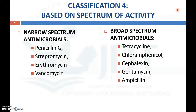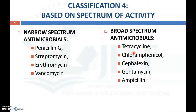The fourth classification is based on spectrum of activity — narrow spectrum or broad spectrum. Narrow spectrum antibiotics kill only one group, either gram-positive or gram-negative. Examples of narrow spectrum are penicillin G, streptomycin, erythromycin, and vancomycin. Broad spectrum antibiotic examples are tetracycline, chloramphenicol, cephalexin, gentamicin, and ampicillin — these can kill both gram-positive and gram-negative microorganisms.